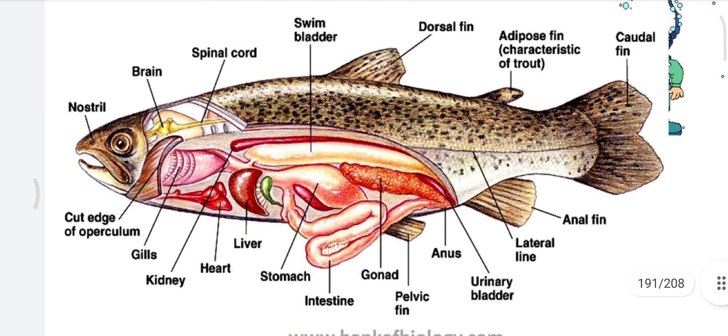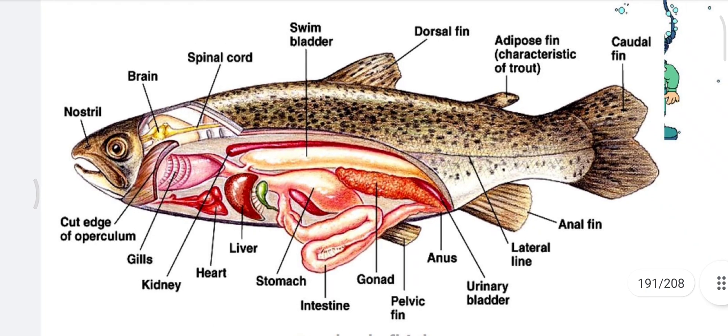Looking at the diagram, we can see nostrils and the ventral mouth. The cut edge of the operculum is visible, covering the gill chamber. The kidney is present, and the swim bladder maintains buoyancy. Gonads are also present, along with caudal fins, dorsal fins, ventral fins, and pelvic fins in the fish.